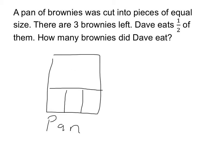We're told David eats half of them. That means we're going to cut all three brownies into two equal pieces and eat one of those pieces. From the picture, we see that we did something with a half of those three brownies. Mathematically, we could solve this by taking one-half times three.